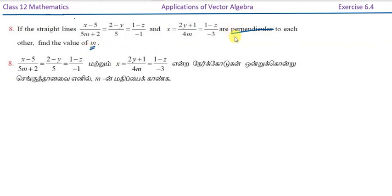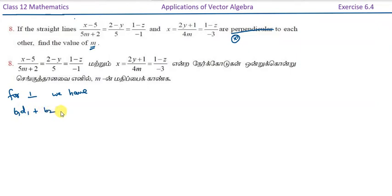For perpendicular lines, we apply the condition: b1·d1 plus b2·d2 plus b3·d3 equals 0. Now we apply this condition and find the value of m by rearranging the lines.